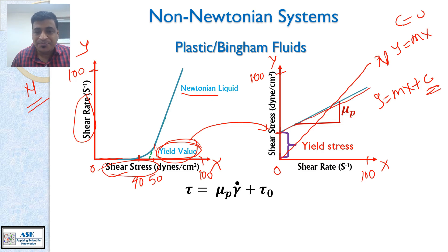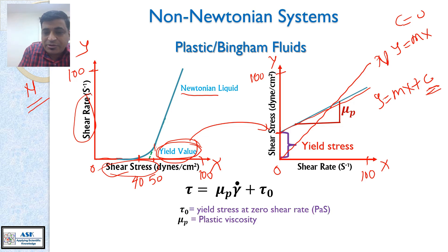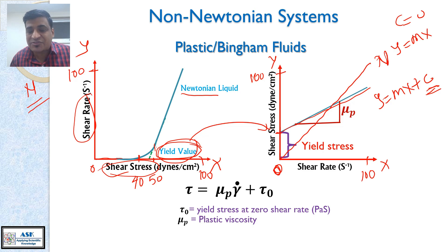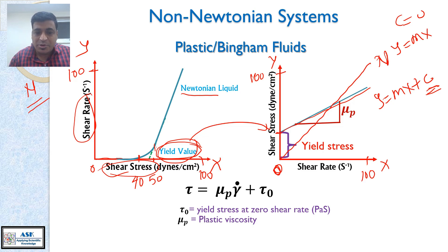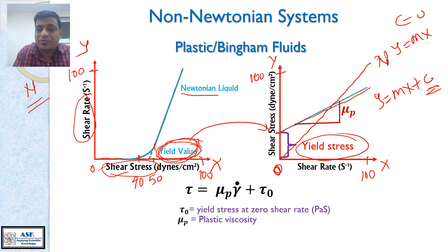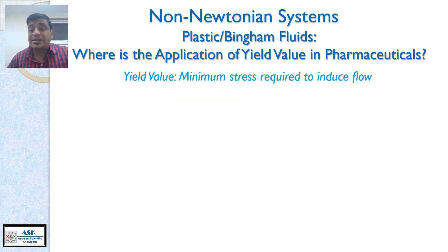Once you apply that certain shear stress, you get the proportional relationship. The equation is: τ = μp·γ̇ + τ₀. τ₀ is the yield stress at zero shear rate — that is the shear stress you apply in order to make these liquids flow. And μp is the plastic viscosity. This yield stress or yield value is very critical in pharmaceutical development.